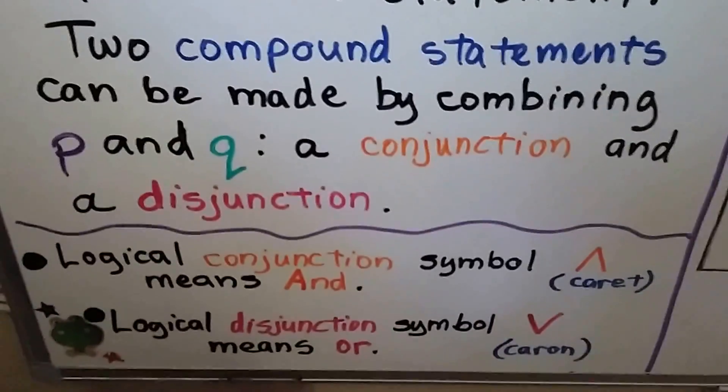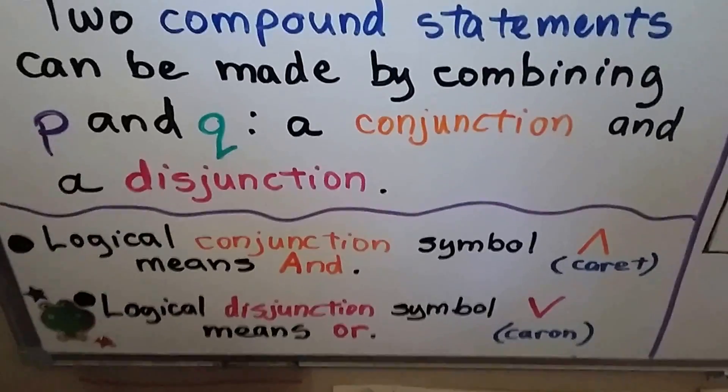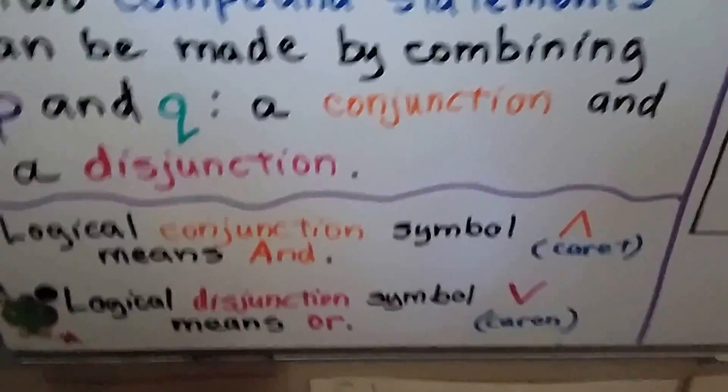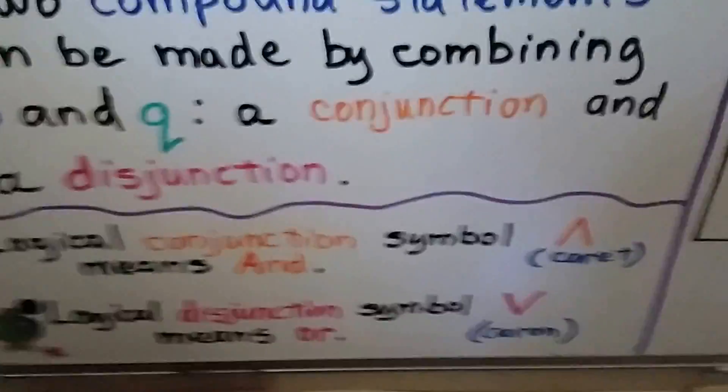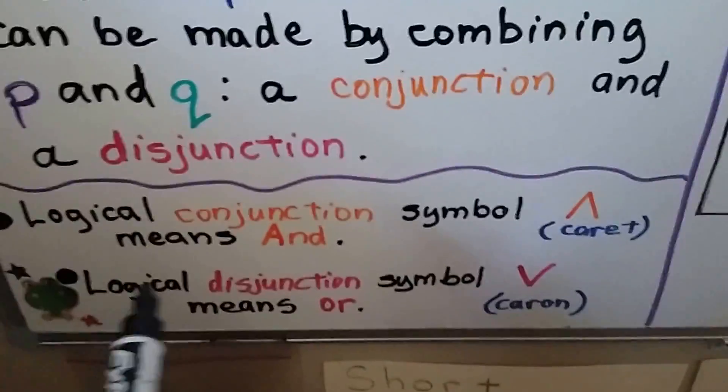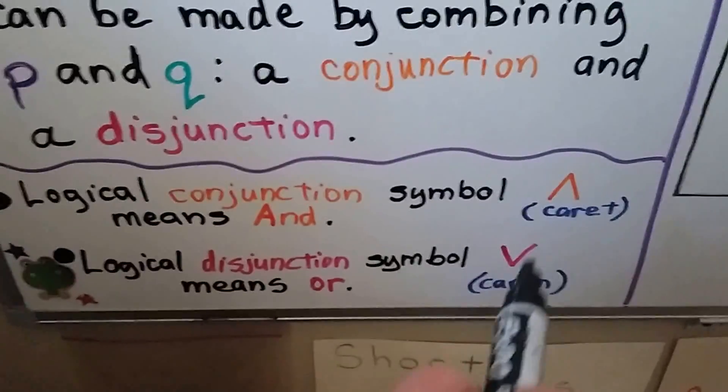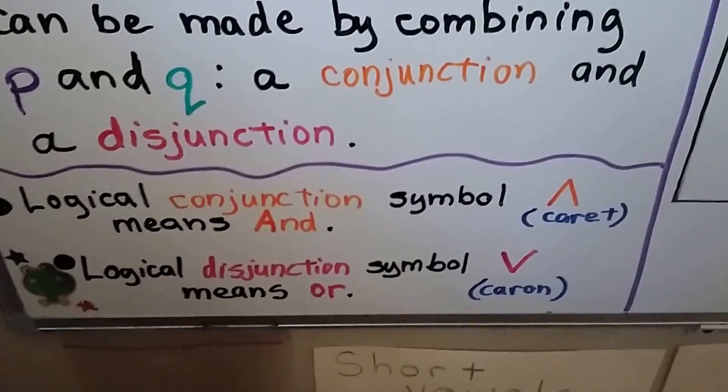Now we're going to be dealing with some symbols here. The logical conjunction symbol means and. That's this orange pointing up thing here. It's called a caret. The logical disjunction symbol means or, and it's called a Karen, and it's like a V. It's like an upside down caret.